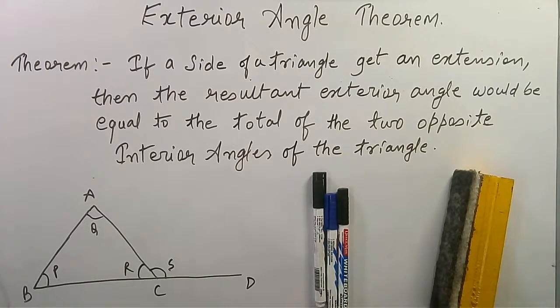If a side of a triangle gets an extension, then the resultant exterior angle would be equal to the sum of the two opposite interior angles of the triangle.